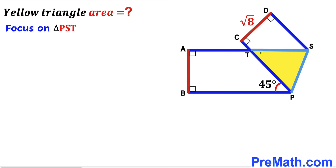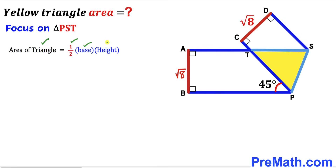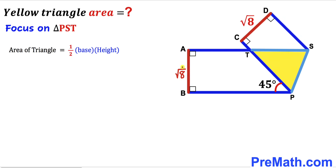Let's focus on the yellow shaded triangle PST. Since we are interested in calculating its area, let's recall the formula: area equals one-half times base times height. The width AB equals square root of 8 units, which will serve as the height of this triangle. However, we don't know the base ST, so we need to calculate that side length.